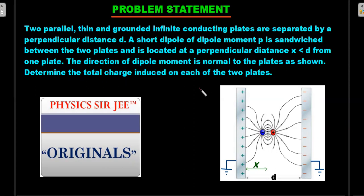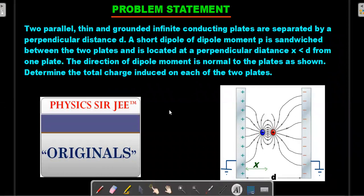I am going ahead with the formal reading of the question. Two parallel, thin, and grounded infinite conducting plates are separated by a perpendicular distance d. A short dipole of dipole moment p is sandwiched between the two plates and is located at a perpendicular distance x less than d from one plate. The direction of the dipole is normal to the plates as shown. Determine the total charge induced on each of the plates. So this is the question. I hope you have paused the video and given it a fair try.